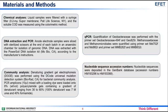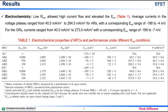Nucleotide sequence accession numbers: Nucleotide sequences were deposited in the GenBank database. Now let us see the results obtained from this paper. Electrochemistry: Low external resistance allowed high current flow and elevated the anode potential, as shown in Table 1.